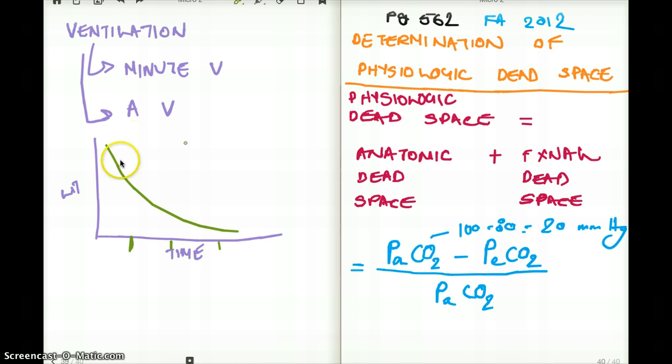So to calculate our minute ventilation, we take tidal volume times breaths per minute. That's minute ventilation. And the reason we use this equation, tidal volume times breaths per minute, is because in minute ventilation we are not dealing with really the dead space.